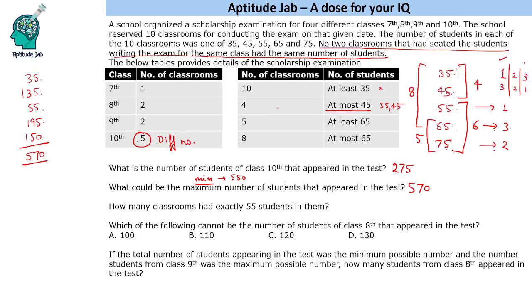The next question says: how many classrooms had exactly 55 students in them? We can uniquely determine that there is only one classroom that has exactly 55 students.